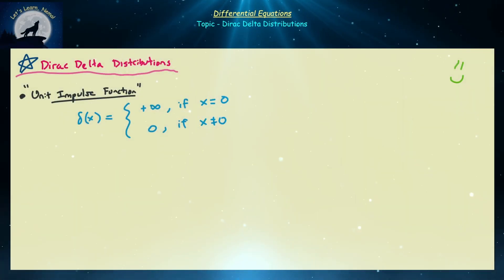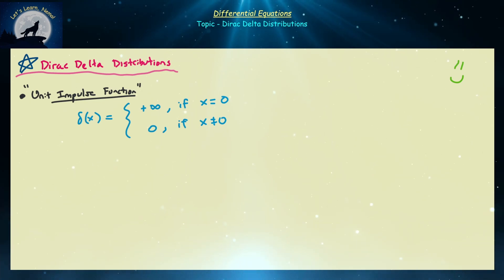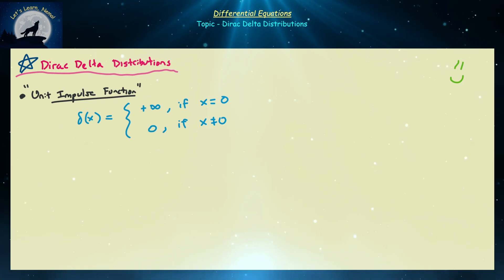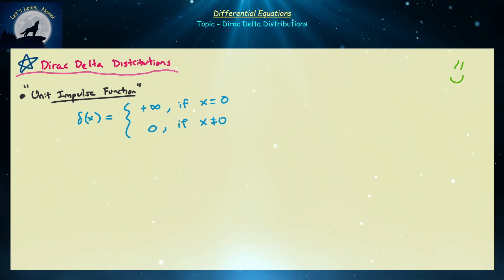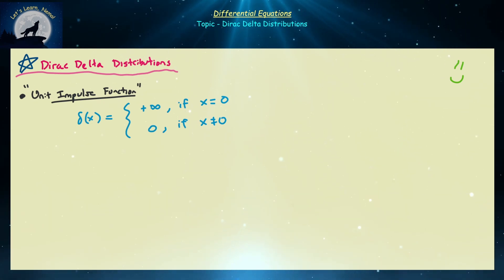Hello everyone and welcome back to the series on differential equations. Today we're going to be revisiting a topic that we introduced when we were first talking about how to solve differential equations with Laplace transforms — that function was known as the unit impulse function, and some people will also describe it as the Dirac delta distribution.